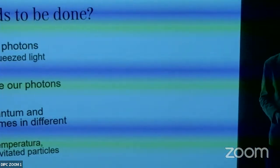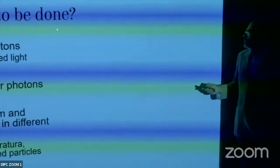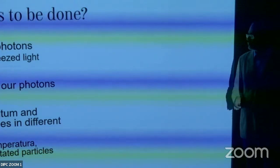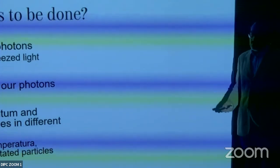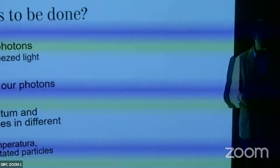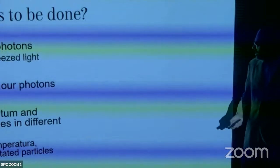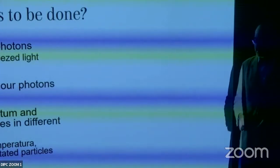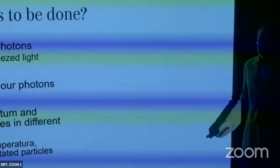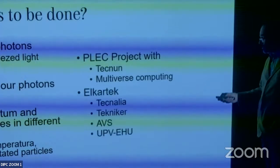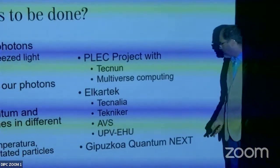What else do we want to do? We want to move to more photons — Maria is developing a quantum squeezed light source for more photons and better measurement capability. We want to hyper-entangle our photons in all controllable degrees of freedom, compare classical and quantum regimes, use different materials, temperatures, and pressures, and test what happens with biological particles. We have a project with Multiverse Computing and other companies.